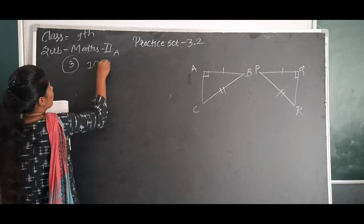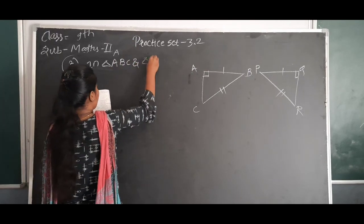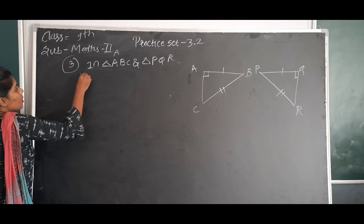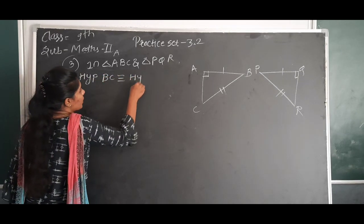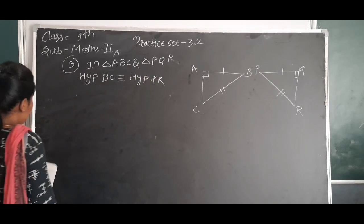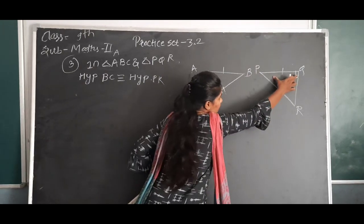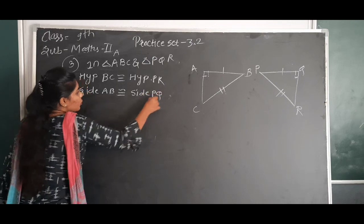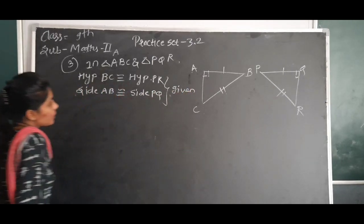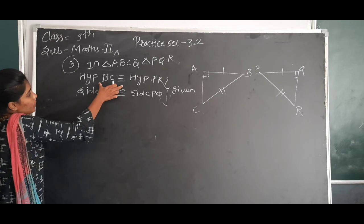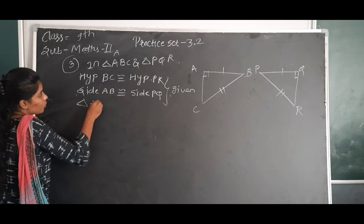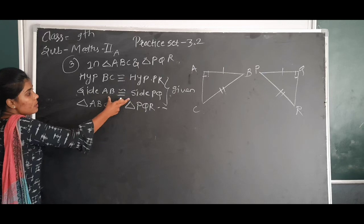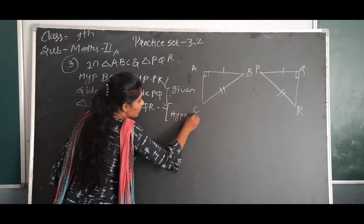In triangle ABC and triangle PQR: hypotenuse BC is congruent to hypotenuse PR. Side AB is congruent to side PQ. Since the hypotenuse and one side are congruent, triangle ABC is congruent to triangle PQR by the Hypotenuse-Side test.